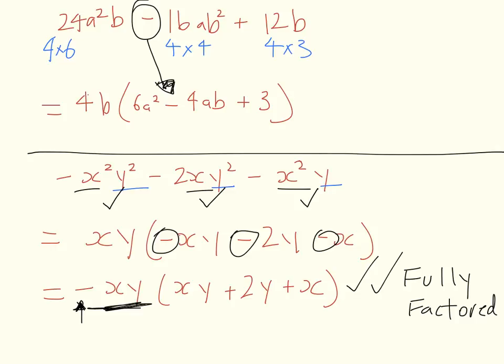Or in this case with the negative as well. We could have just taken out x as a factor, and obviously the inside of the brackets would look different, but then it wouldn't be fully factored, it would just be partially factored. So we're always looking to fully factorize.